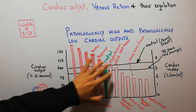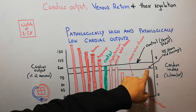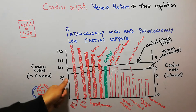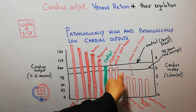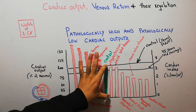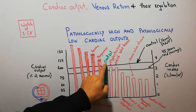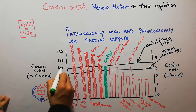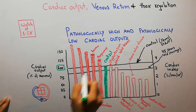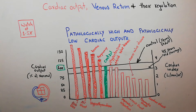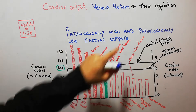Two control lines are drawn: one for young adults and another for older adults around 45 years or more. Different conditions causing high or low cardiac output are plotted above or below the control point, which represents 100% of the normal cardiac output. Beriberi is the first condition shown above this line.